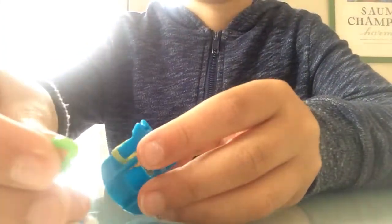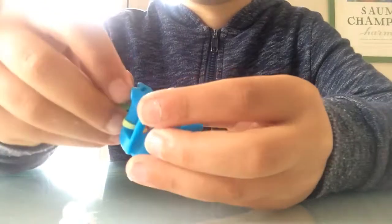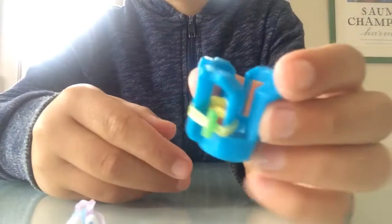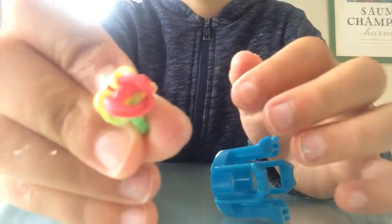Take your c-clip and put it on. So it should be like that. Then you want to take it off. It'll look like that.